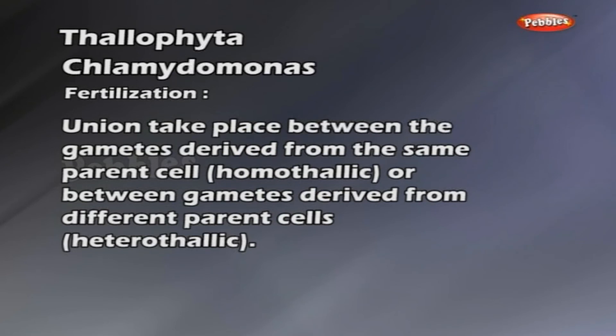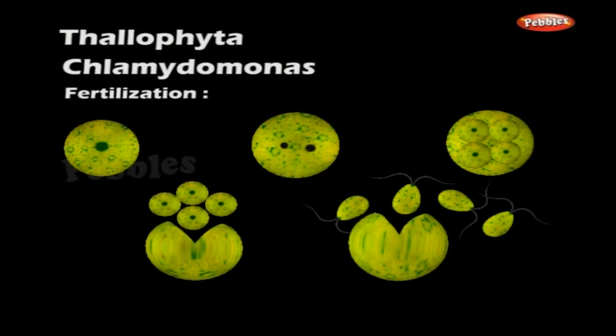Fertilization: Union takes place between the gametes derived from the same parent cell (homothalic), or between gametes derived from different parent cells (heterothalic). Gametes of positive type never fuse with themselves, and this is true for negative type also; fusion occurs only between positive and negative gametes. Fusion of gametes leads to the formation of a zygote.